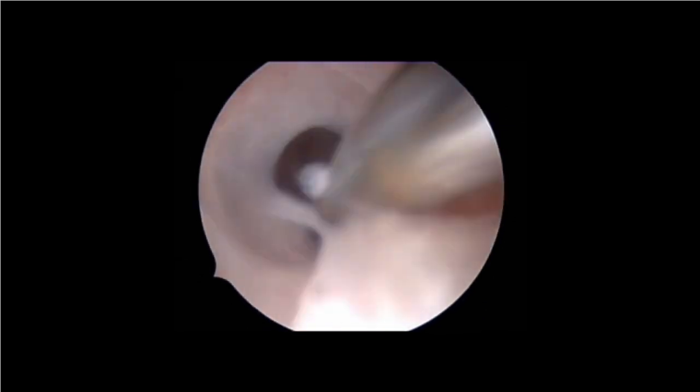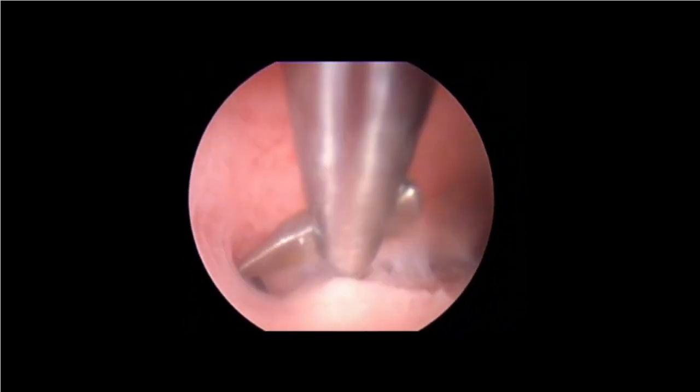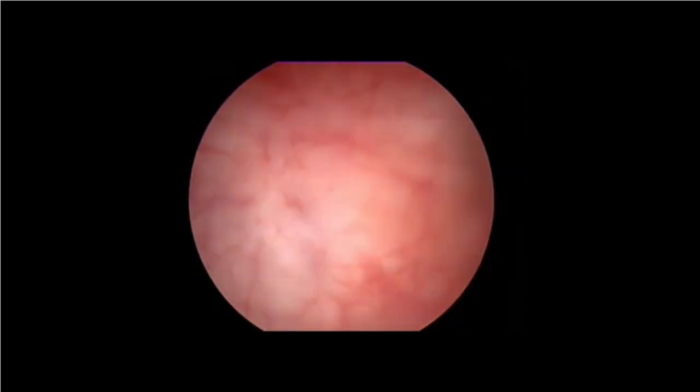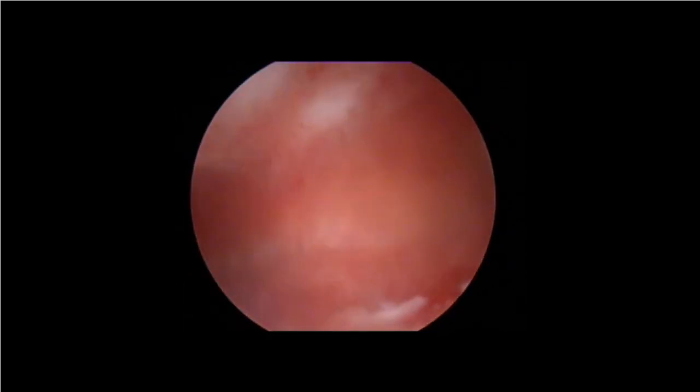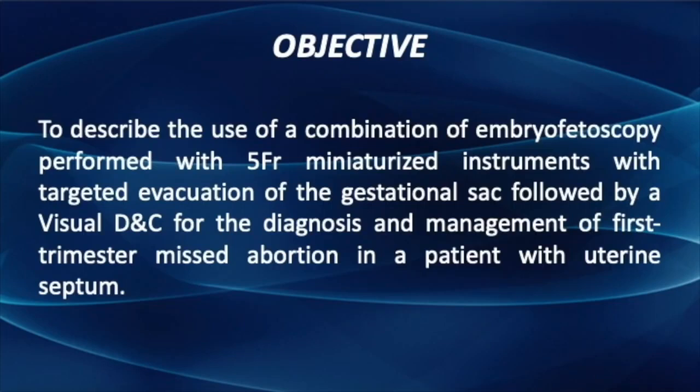We then performed adhesiolysis until complete visualization of the uterine cavity and bilateral tubal ostium was achieved. The objective of this video article is to describe the use of a combination of embryofetoscopy performed with 5 French miniaturized instruments with targeted evacuation of the gestational sac, followed by visual DNC for the diagnosis and management of first-trimester misabortion in a patient with uterine septum.